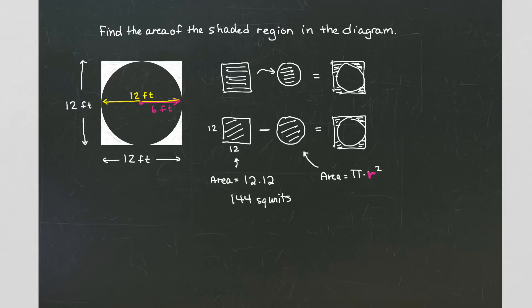Now let's calculate the area for the circle. The area for that circle part that I'm taking out is pi times the radius squared, or 6 squared. So the area for the circle is going to be 36 pi square units.